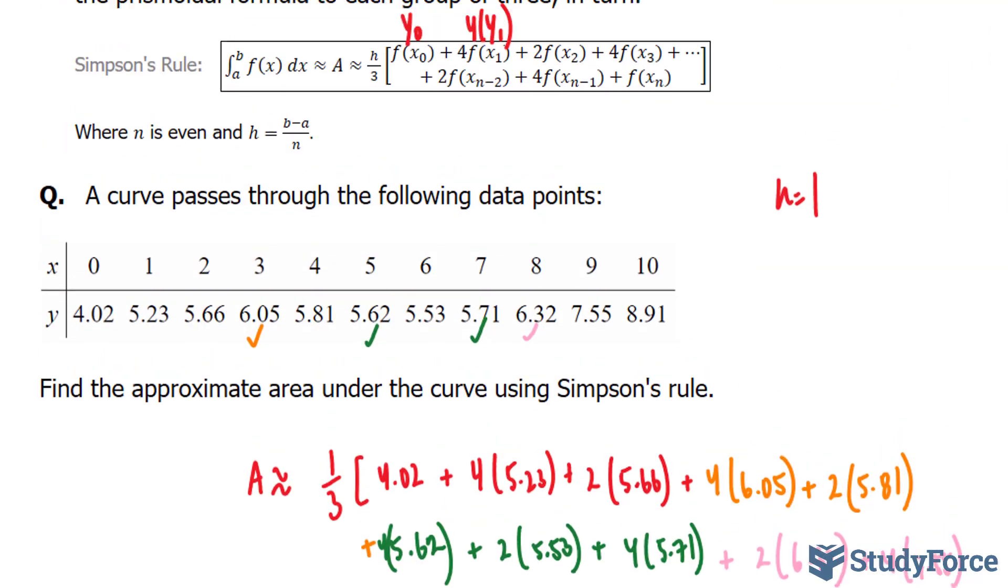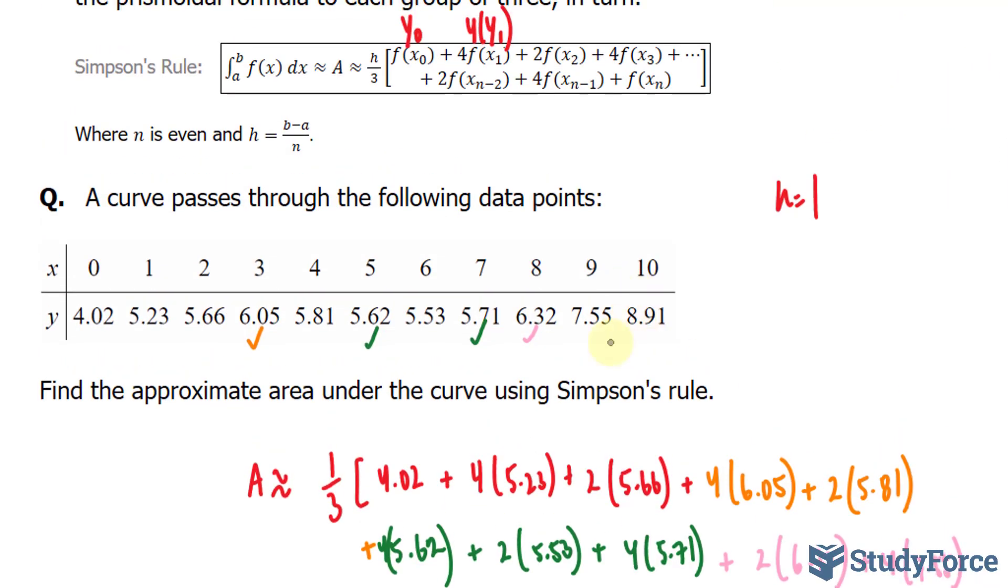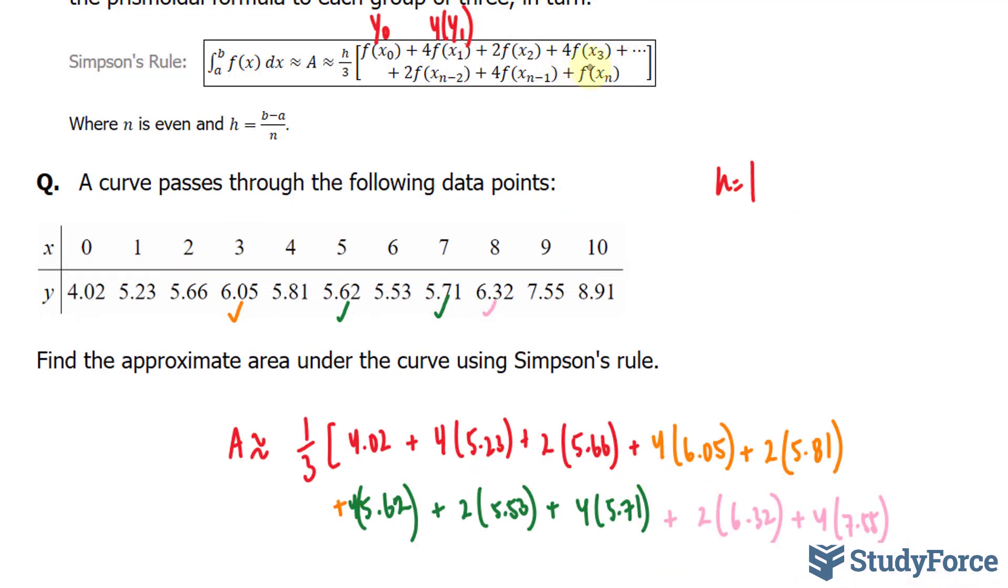This is the interesting part: in our last observation, take a look at the formula. We have 4 times f(x_{n-1}), which means our second-to-last y observation, plus your final observation without multiplying it by anything else. So we have plus 8.91.